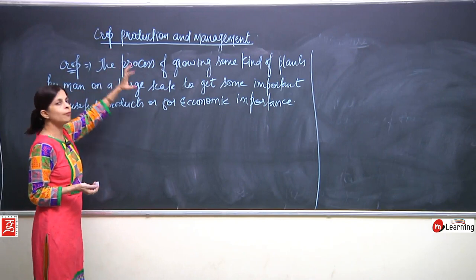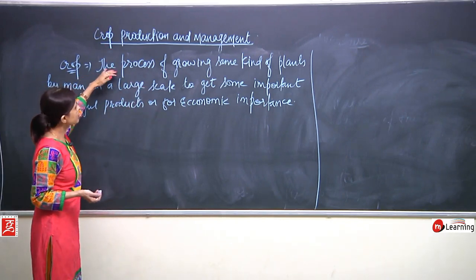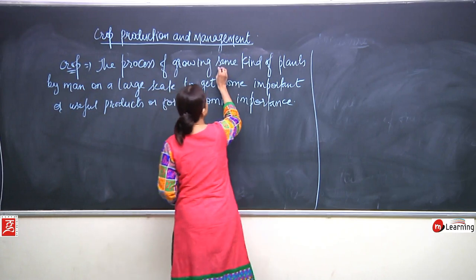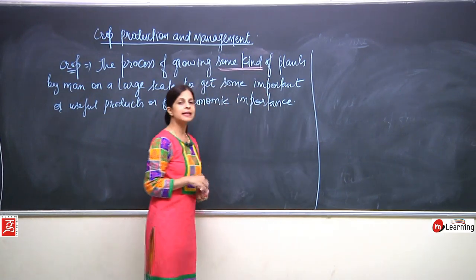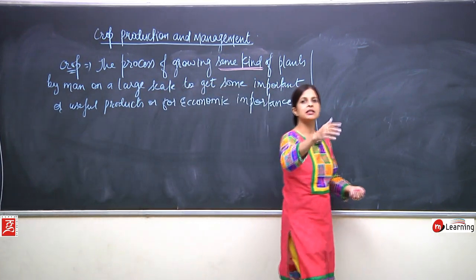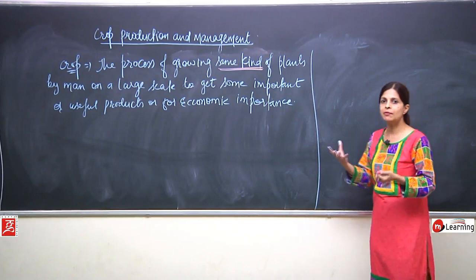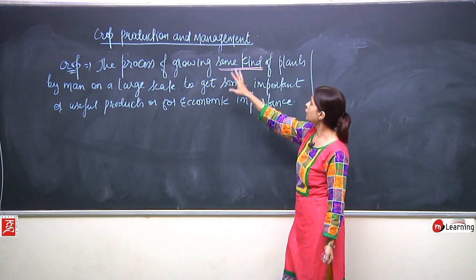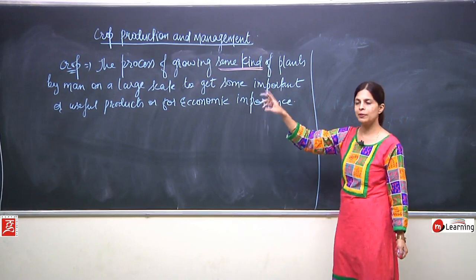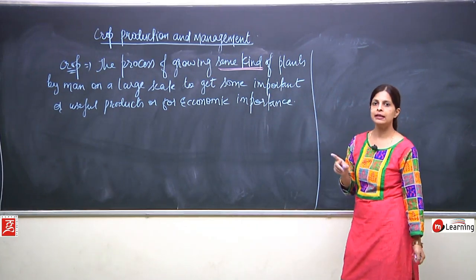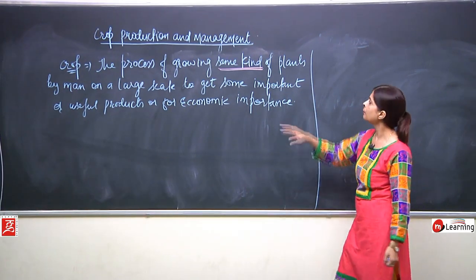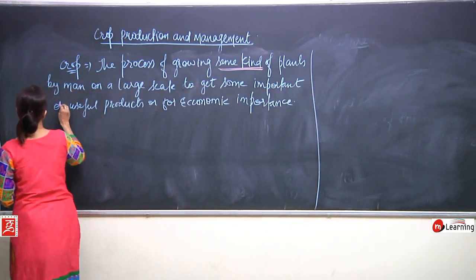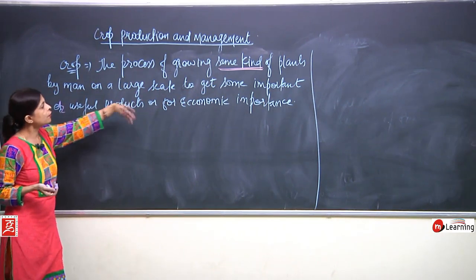Here we are discussing what crop actually is. The process of growing same kind of plants by men — one key word is 'same kind' — like when we talk about a field, there should be same kind of crops. It cannot be one wheat, then barley, then maize. It has to be on a large scale to get some important or useful products or for economic importance.